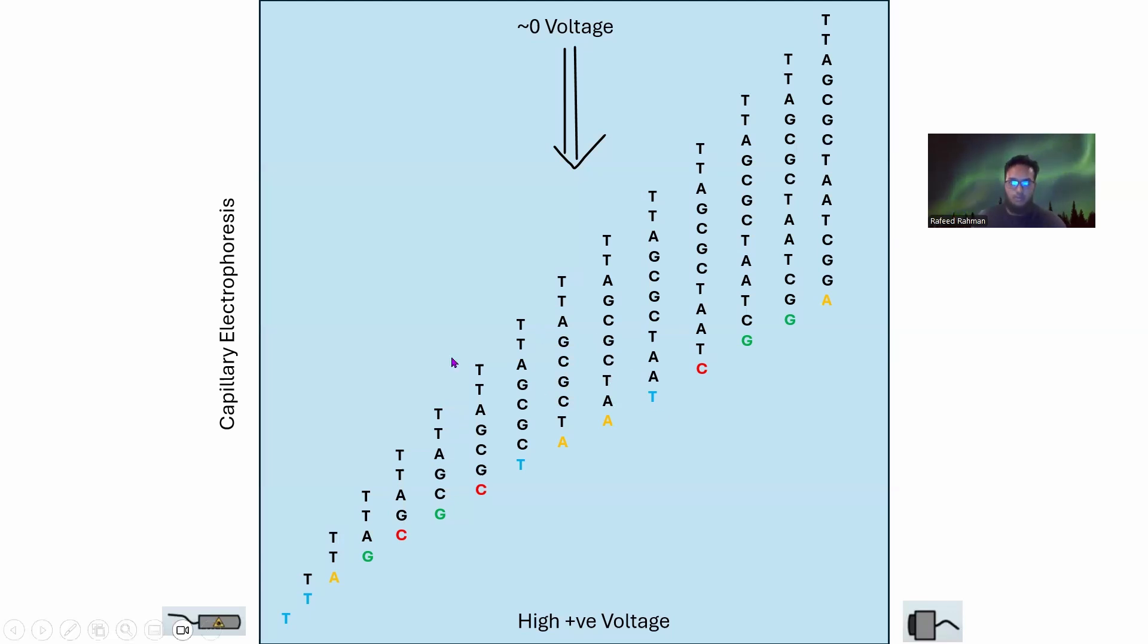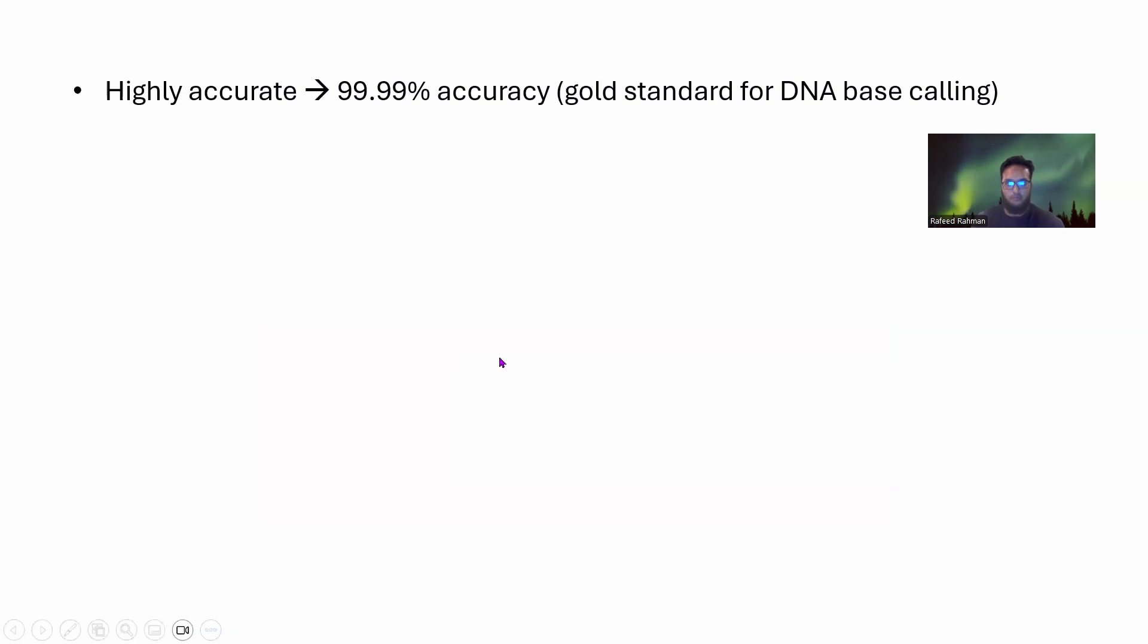What are some important characteristics of Sanger sequencing? First, it is highly accurate - 99.99% accuracy. The accuracy is mind-boggling. This is the gold standard for DNA base calling. If you're developing some new technique and want to verify it, you should use Sanger sequencing to know the exact bases.